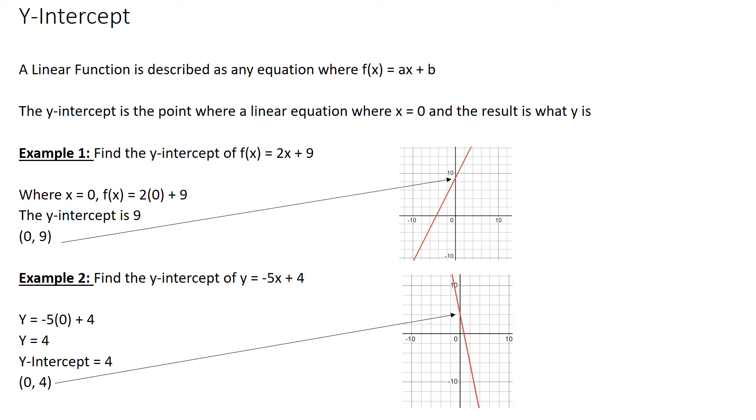Now, when we look at linear functions, we can determine what the slope is, and the y-intercept by looking at the equation. Y-intercept is where the line intercepts the y-axis. And where it intercepts the y-axis, x is 0, and I can simply put in 0 for x to get the y-intercept.